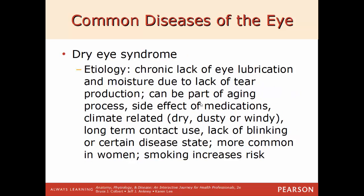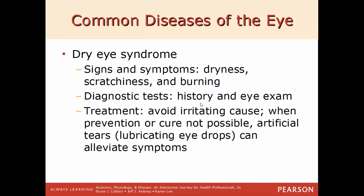Dry eye syndrome: a chronic lack of lubrication in the eye due to insufficient tear production. Can be part of the natural aging process, a side effect of medications, climate-related (very dry, arid, or windy areas), long-term contact lens use, lack of blinking, or certain diseases. Much more common in women than men, and smoking increases risk. Signs include dryness, scratchiness, and burning. Diagnosed by eye exam and personal history. Treatment: avoid the irritating cause; when prevention isn't possible, artificial tears — lubricating eye drops — help alleviate dryness, burning, and itchiness.